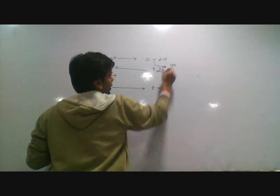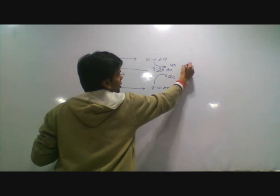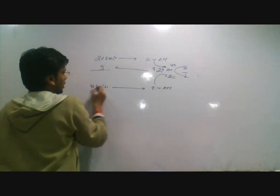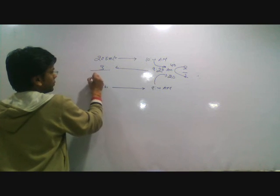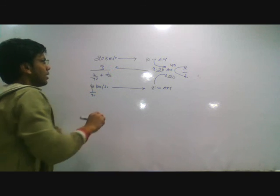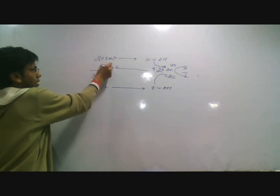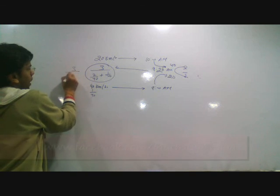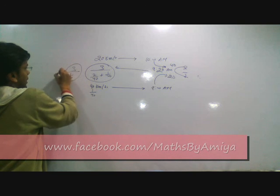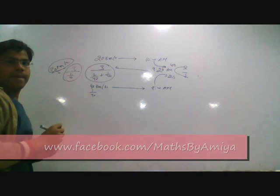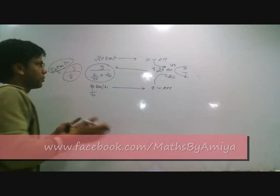That is 40, 20, 2 is to 1. So answer should be 2 plus 1, 3, and 1 by 40, 2 by 40 plus 1 by 20. That is, and this is your answer: 3 upon 1 by 10. That is nothing but 30 km per hour. I hope you have done it before me.